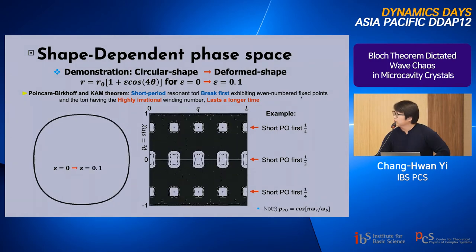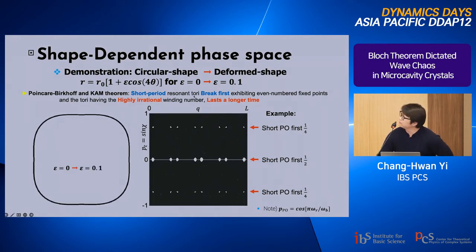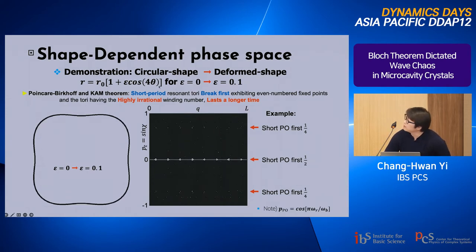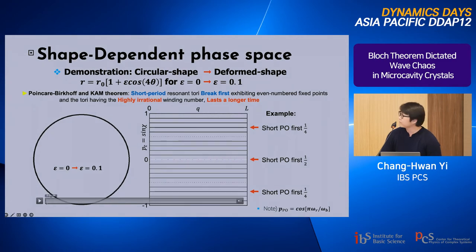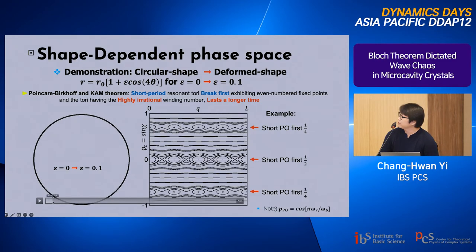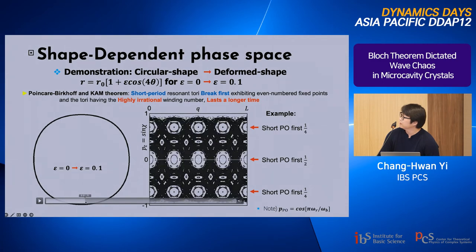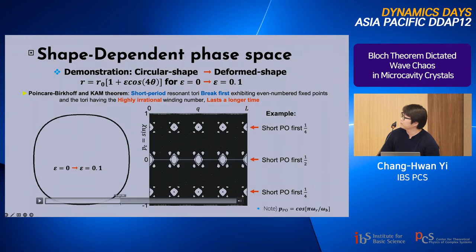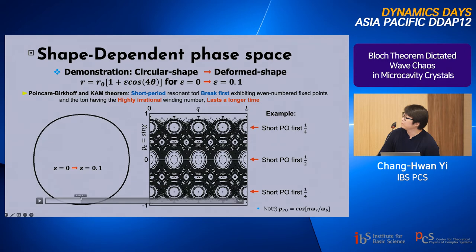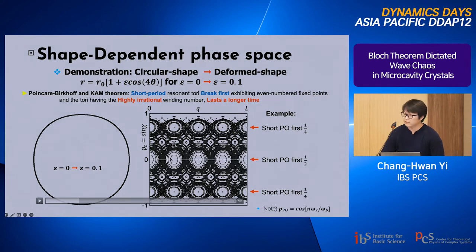This is an example of a billiard whose boundary is given by a simple equation. When the deformation parameter is increased from the circular integrable limit, the system transitions toward chaotic behavior. Before it becomes fully chaotic, there is an intermediate mixed regime where chaotic sea and regular motion coexist in phase space.